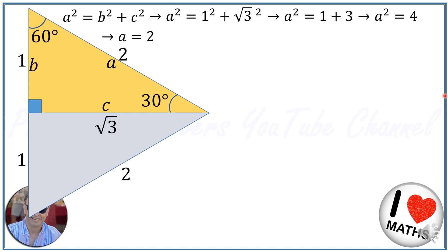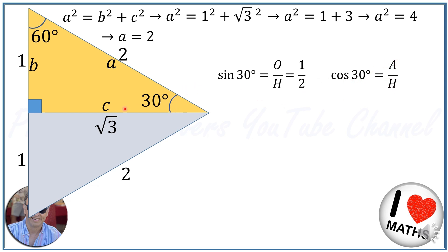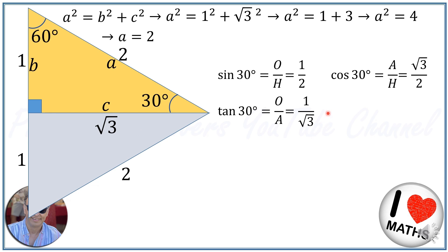Applying the same trigonometric ratios: sine of 30 degrees is opposite over hypotenuse, where the opposite is 1 and hypotenuse is 2, so sine of 30 degrees is 1 over 2. Cosine of 30 degrees is adjacent over hypotenuse, where the adjacent is square root of 3 and hypotenuse is 2, so cosine of 30 degrees is square root of 3 over 2. For tangent, opposite over adjacent is 1 over square root of 3, which simplifies by multiplying numerator and denominator by square root of 3 to give square root of 3 over 3.